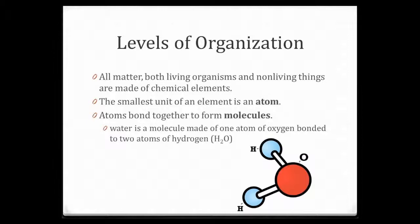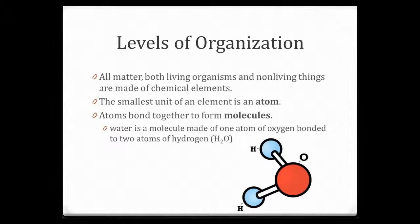When we take molecules and put those together, we form what's called a macromolecule. The prefix 'macro' means big, and this is a big molecule. Some examples of macromolecules are proteins, carbohydrates, and fats. This is a drawing of a carbohydrate molecule — specifically a molecule of glucose, which is considered a macromolecule. You can see it's made out of carbon represented by C, hydrogen represented by H, and oxygen represented by O. It's a macromolecule because it's big — a macromolecule that's a carbohydrate.